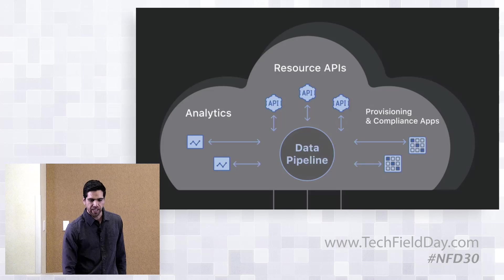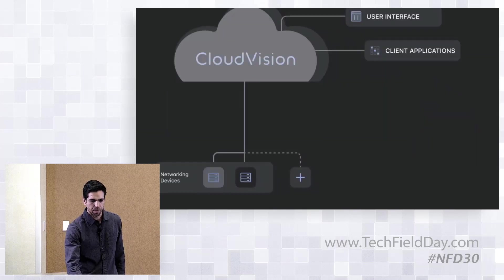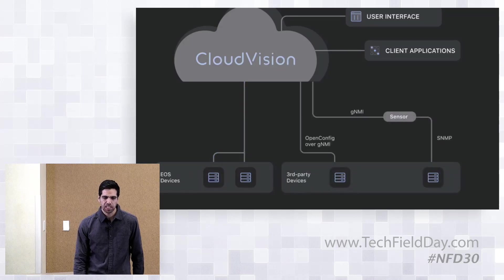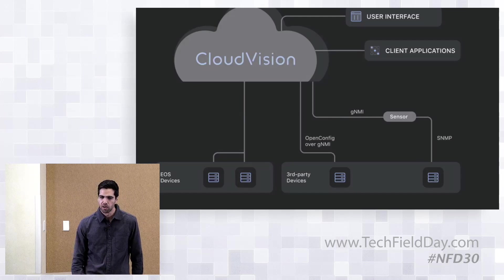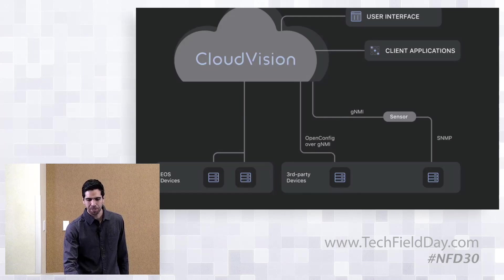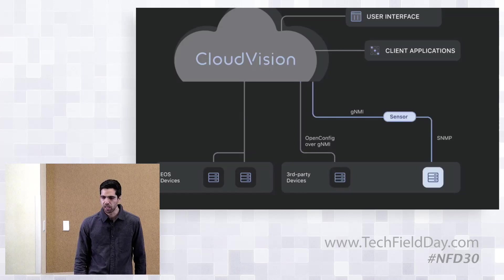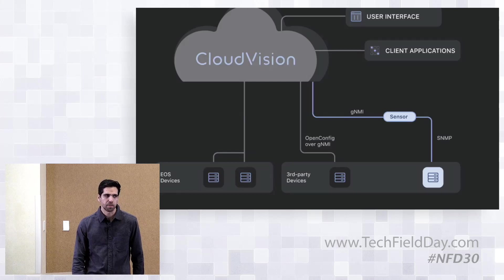To the point about it being a generic pipeline — CloudVision doesn't really care whether these are EOS devices streaming data to it. We can take data from other devices as well. The data formats we ingest right now are OpenConfig — so any device that speaks OpenConfig — or any device that speaks SNMP. SNMP isn't a streaming protocol, so you need an intermediate process, a sensor. We have one built into CloudVision, but you can also deploy a sensor locally alongside those devices that will pull SNMP and turn that into a stream up to CloudVision over GNMI.